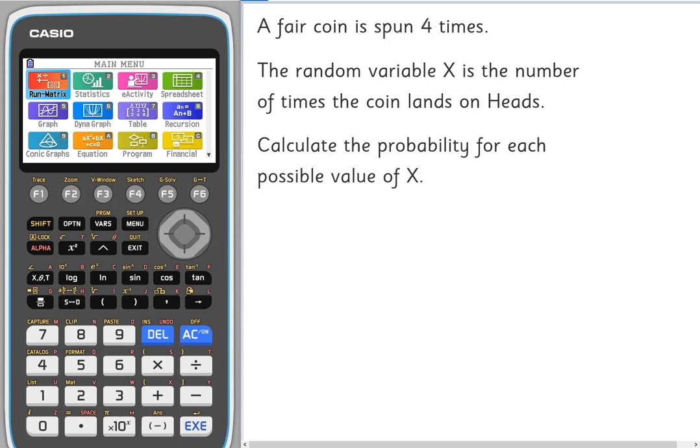This video follows on from an earlier one where we looked at the binomial distribution probabilities associated with an experiment where we spin a fair coin four times and X is the random variable which is the number of times the coin lands on heads. So X could be anything from 0 up to 4: 0, 1, 2, 3 or 4.